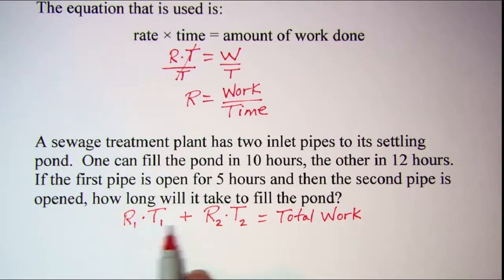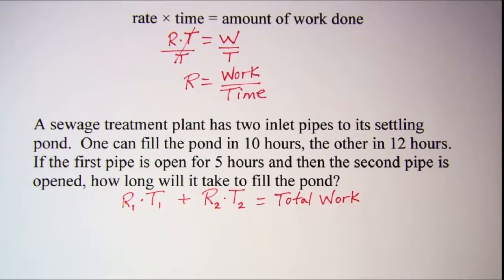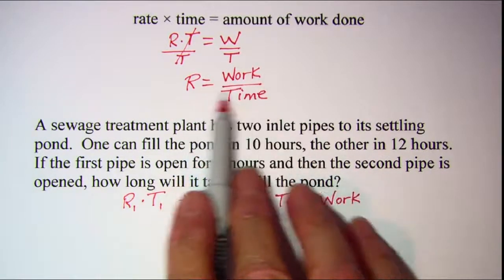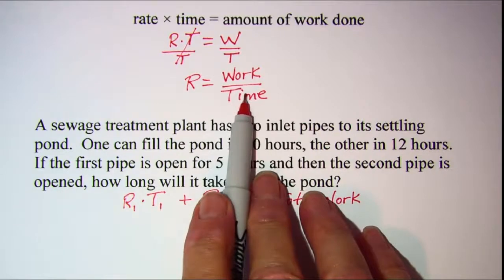Now you can use whatever variables and subscripts that you want to work this, whatever feels comfortable for you. So to find the rate of the first pipe, I need to use this second equation.